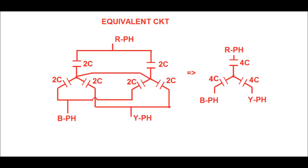The equivalent circuit for the double star connection has been shown. In each phase of each star connection the equivalent capacitance is 2C. Since the two stars are connected in parallel, these two 2C capacitances are connected in parallel. Therefore the equivalent capacitance in each phase comes to 4C.